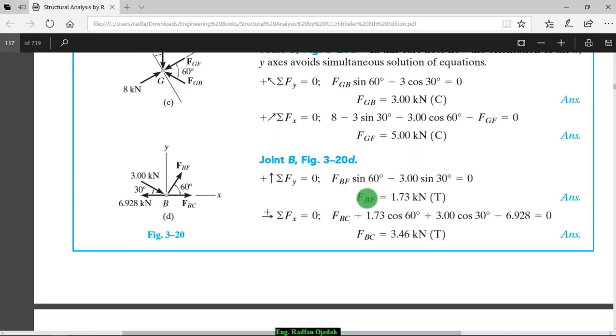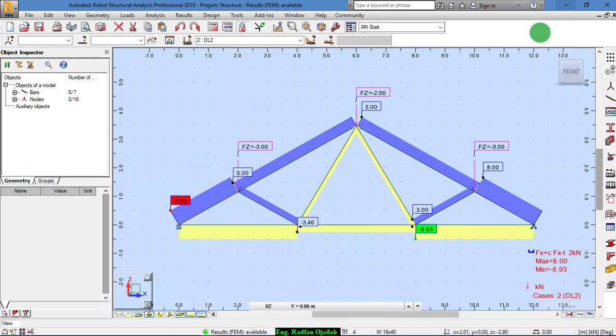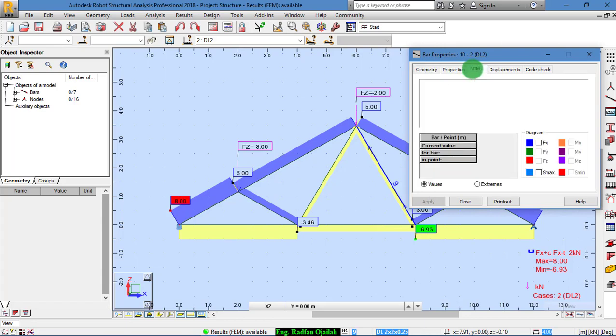The last point is BF, 1.73, and it's in tension. BF is in tension already, but we don't know what is the value of the internal force. Right-click on it and object properties, N-T-M, FX: 1.73, the same as here, 1.73.